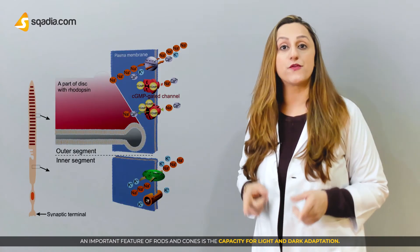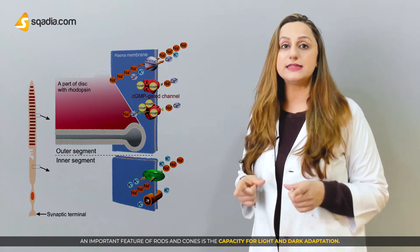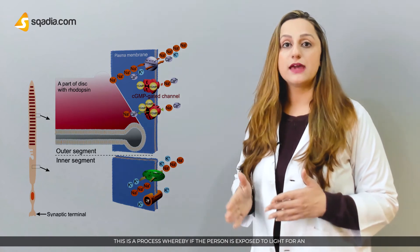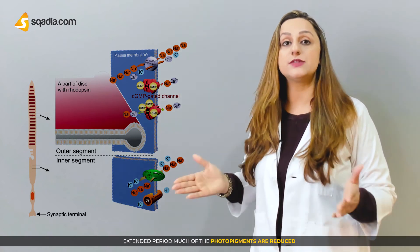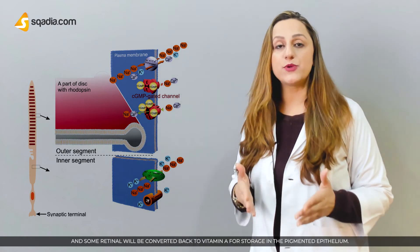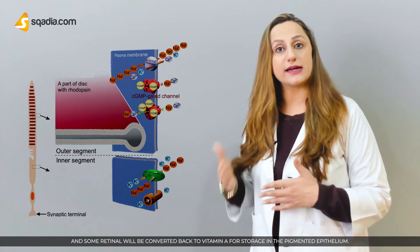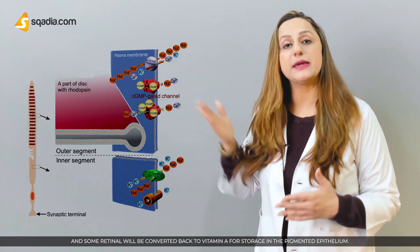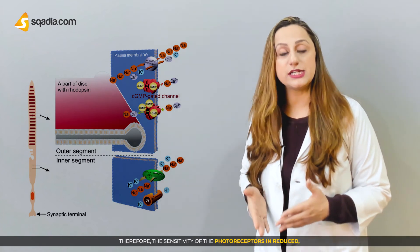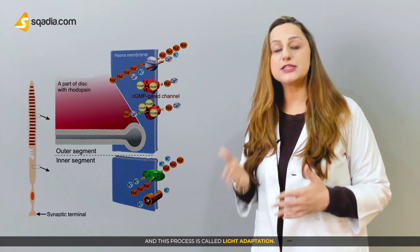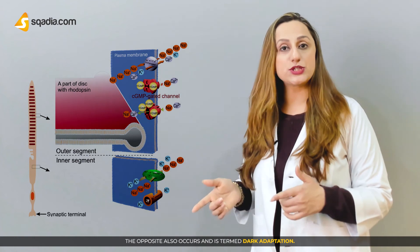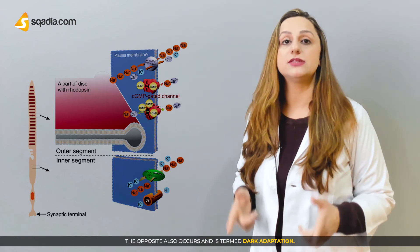An important feature of rods and cones is the capacity for light and dark adaptation. If a person is exposed to light for an extended period, much of the photopigments are reduced and some retinal will be converted back to vitamin A for storage in the pigmented epithelium. Therefore, the sensitivity of photoreceptors is reduced, and this process is called light adaptation. The opposite also occurs and is termed dark adaptation.